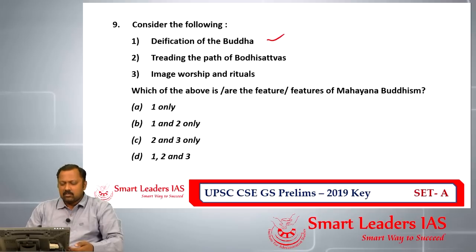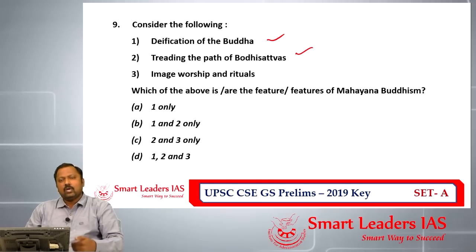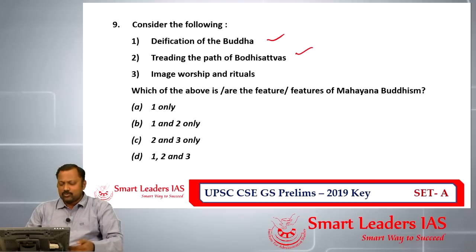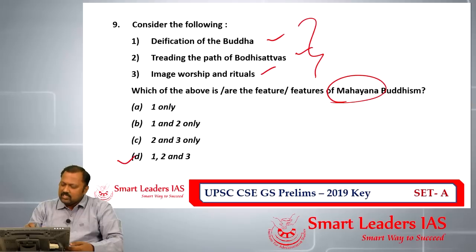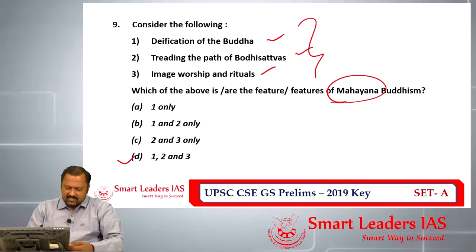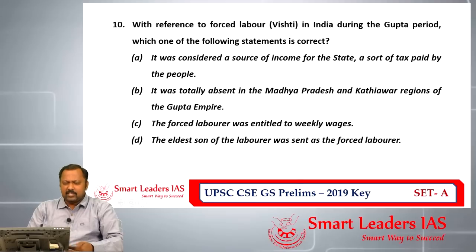Question number nine is about the features of Mahayana Buddhism. The statements cover deification of Buddha — treating Buddha as God — the path of the Bodhisattva (those who have reached the state of Buddha but remain to help others cross over), and image worship and rituals. All three are features of Mahayana Buddhism, as opposed to Hinayana. So the answer for question number nine is D.